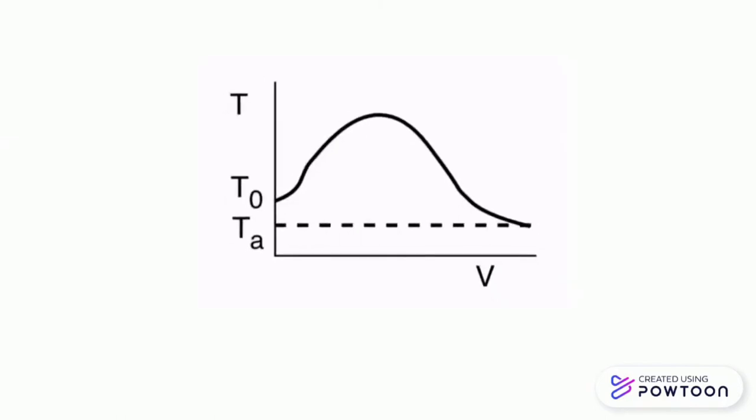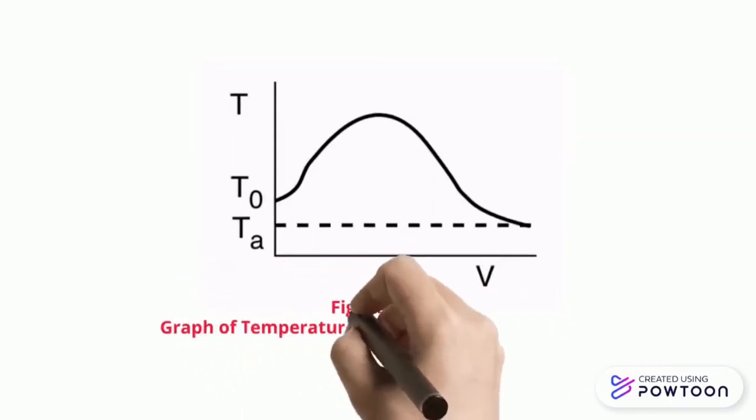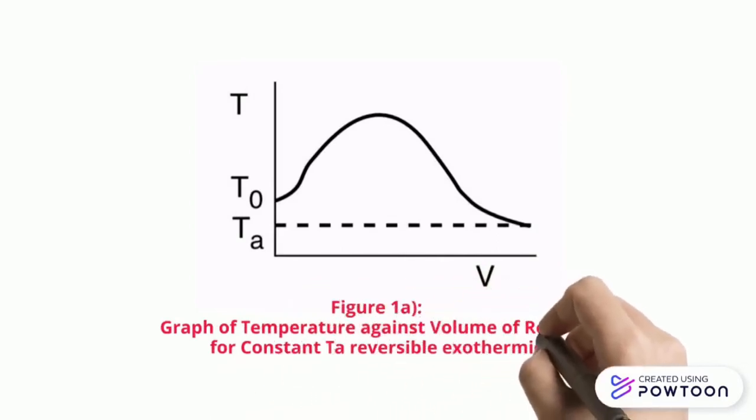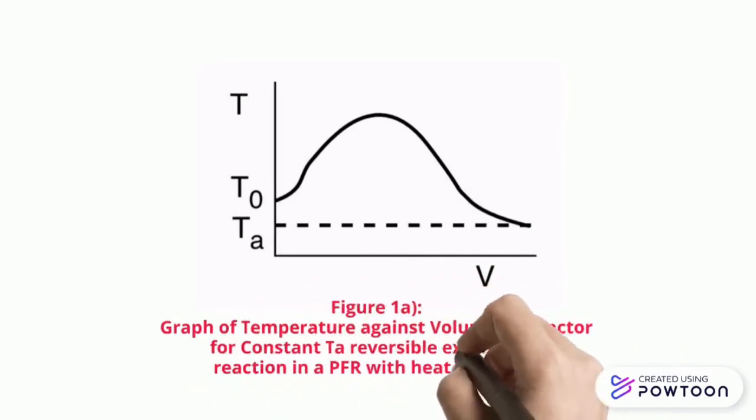Figure 1 shows the graph of temperature against volume of the reactor for constant TA, for reversible exothermic reaction in a PFR with heat exchange.